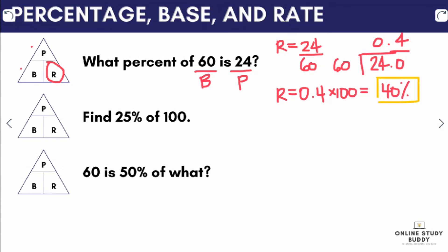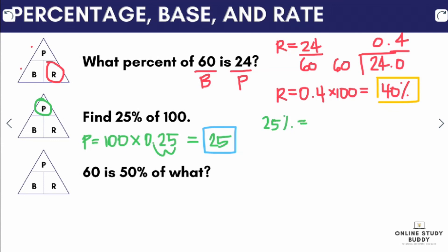For our next problem: find 25% of 100. What we are looking for is the percentage P. We multiply 100 by 25%, which is 0.25: 100 × 0.25 = 25. Also, it's helpful to remember that 25% is the same as 1/4. So knowing that, we can immediately see we are looking for 1/4 of 100, which is 25.